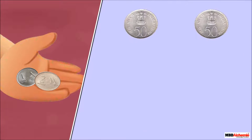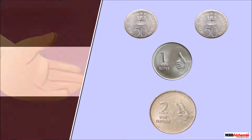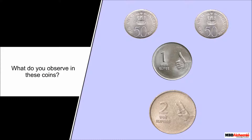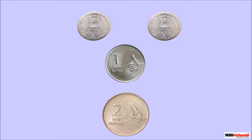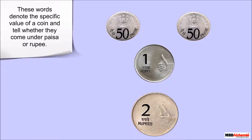These include coins of 50 paise, 1 rupee, and 2 rupees. What do you observe in these coins? There are numbers written on the coins like 50, 1, and 2. Along with 50, the word 'paise' is written. Likewise, with 1 'rupee' is written and with 2 'rupees' is written. These words denote the specific value of a coin and tell whether they come under paisa or rupee.